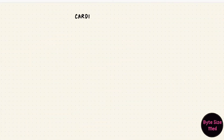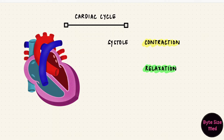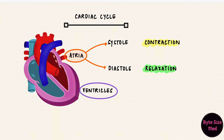The cardiac cycle includes events that happen in the heart from one beat to the next. It contracts to pump blood out and it relaxes while it fills. The contraction is systole and relaxation is diastole, and it happens both in the atria and the ventricles during the course of each cycle.